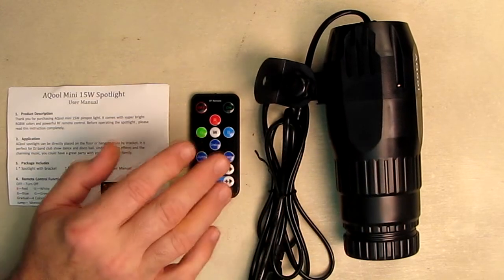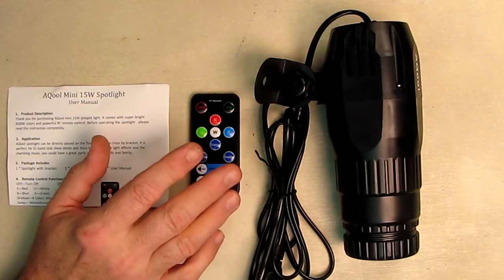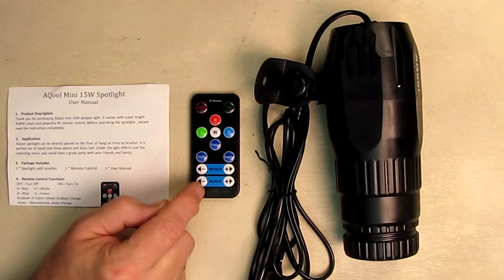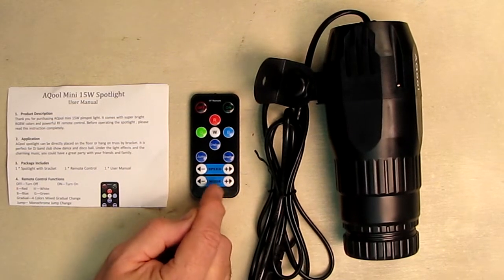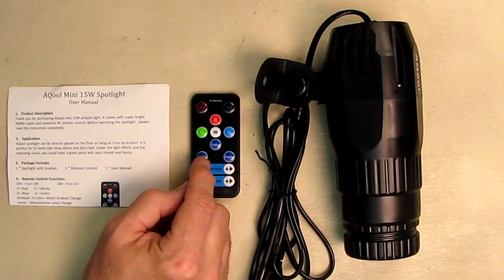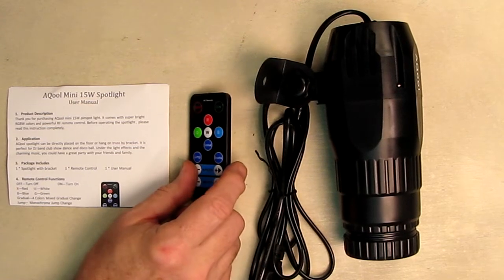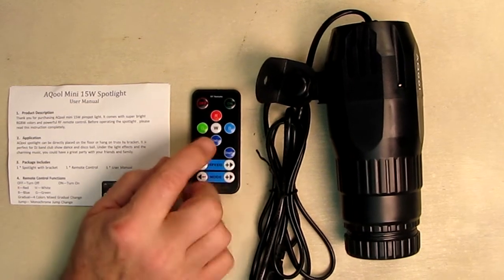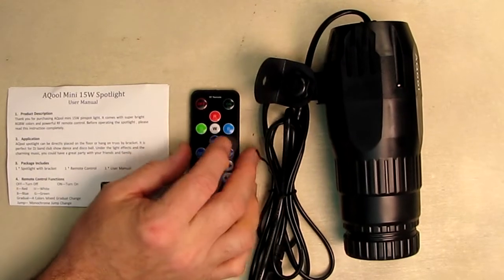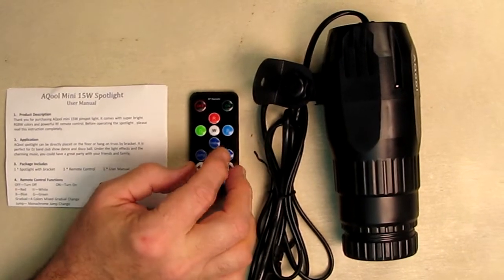This is an RF remote, so you get that nice range and all the controls. You have speed, different modes, jumping between colors, breathing or gradual, and solid color choices. I'm going to show you some examples of where you want to use those solid colors.